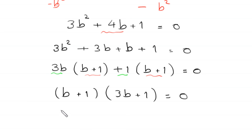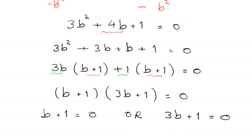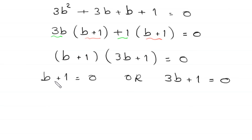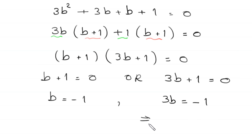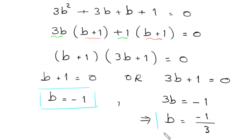From here, either b plus 1 equals 0, giving b equal to negative 1, or 3b plus 1 equals 0, giving 3b equals negative 1, so b equals negative 1 over 3. We get two values of b. However, as discussed earlier, b cannot equal negative 1, so that solution is rejected.